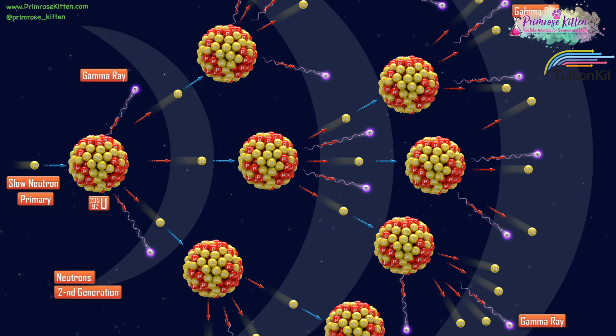Nuclear fission takes place inside nuclear reactors and they start the reaction by firing a neutron at a nucleus. Here we have uranium-235. It could also be a plutonium nucleus.